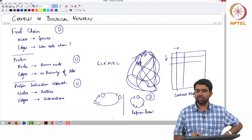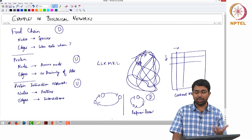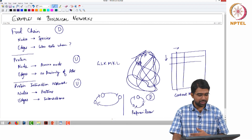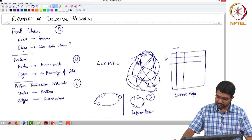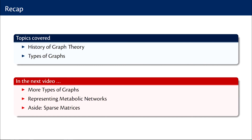These are some examples of networks, and there are many more types with many properties we wish to study. Today we got an introduction to the history of graph theory and the basics and different types of graphs. We will continue with more types of graphs in the next video and start looking at representing metabolic networks, as well as an interesting data structure for representing matrices on a computer.